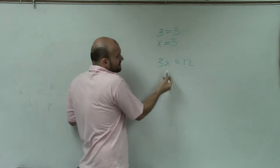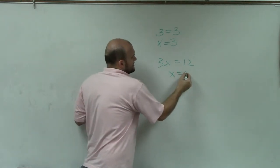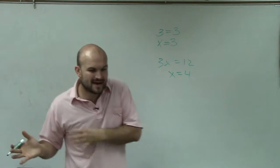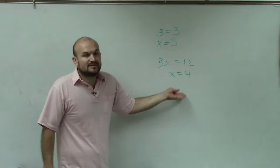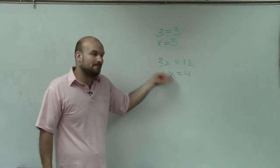So first of all, a lot of you can say, well, 3 times what number equals 12? Oh, well, I know the answer. x is equal to 4. And you totally want to bypass what we learn in one step equations course. But that is what the solution represents.